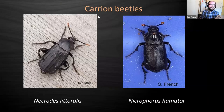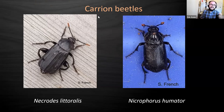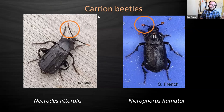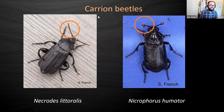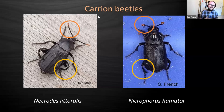People often get confused between two black Nicrophorus species. The easiest way to split them is by their antennae. Nicrophorus littoralis on the left has quite thin, expanded antennae, while Nicrophorus humator on the right has clubbed antennae. Also, littoralis has quite big, bulky, frog-legged legs, while humator is less so - it's a bit more angled, almost triangular.